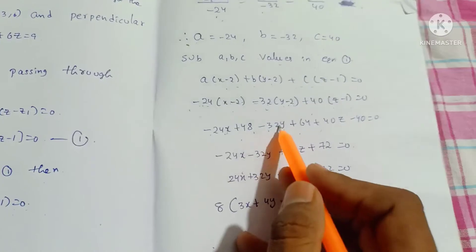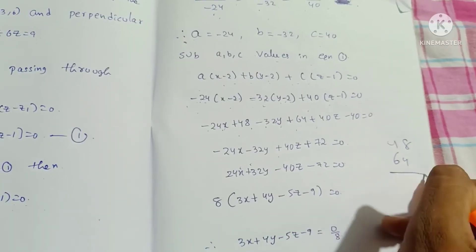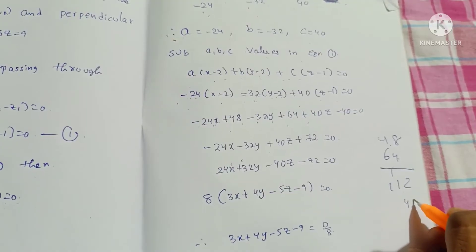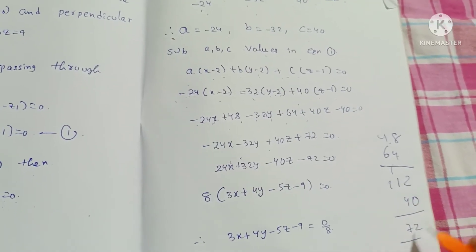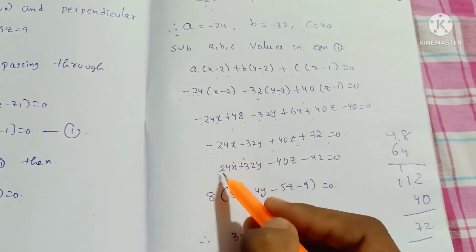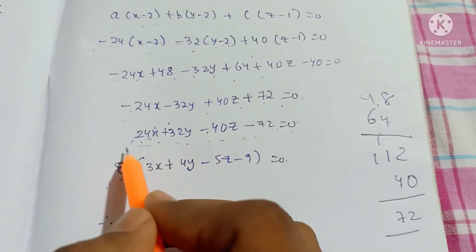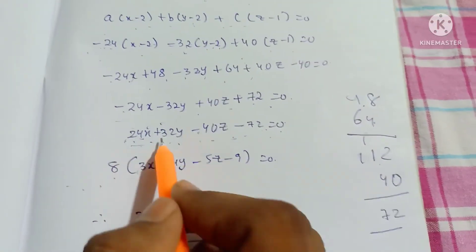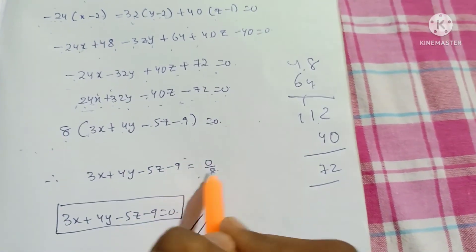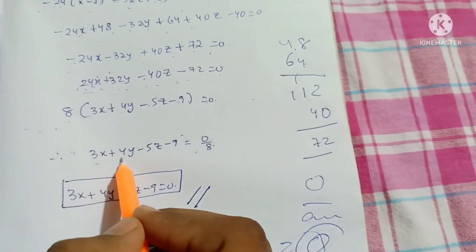Combining terms: minus 24x minus 32y plus 40z plus 72 equals 0. Dividing everything by minus 8: 3x plus 4y minus 5z minus 9 equals 0. So the final equation of the plane is 3x plus 4y minus 5z minus 9 equals 0.